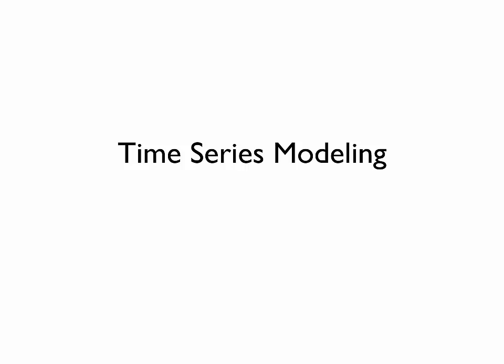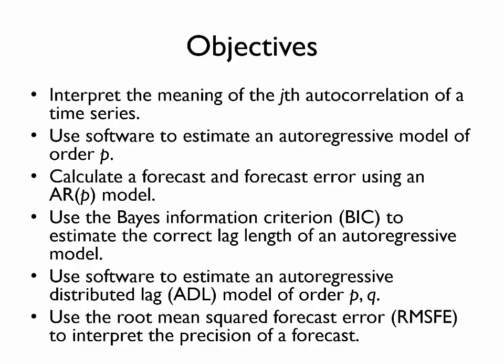This econometrics video will introduce time series modeling, including a discussion of serial correlation. By the end of this video, you should be able to interpret the meaning of the jth autocorrelation of a time series, use software to estimate an autoregressive model of order p, calculate a forecast and forecast error using an autoregressive model of order p, use the Bayes information criterion to estimate the correct lag length of an autoregressive model, use software to estimate an autoregressive distributed lag model of order p, q, and use the root mean squared forecast error to interpret the precision of a forecast.